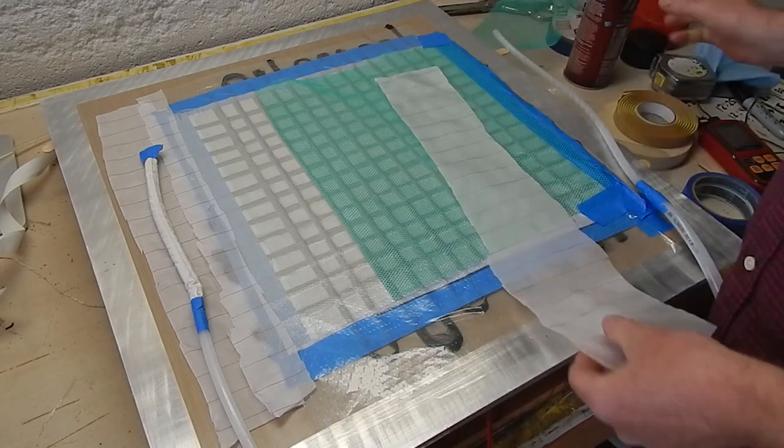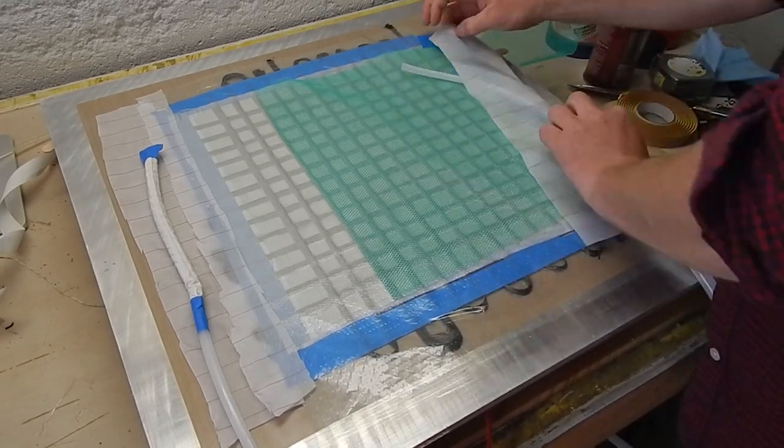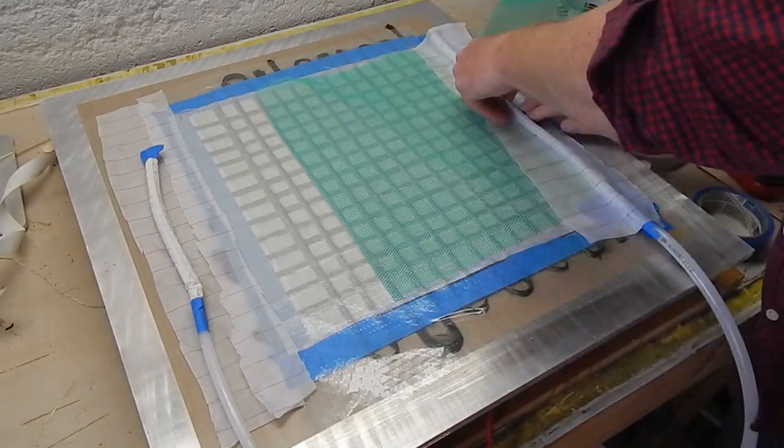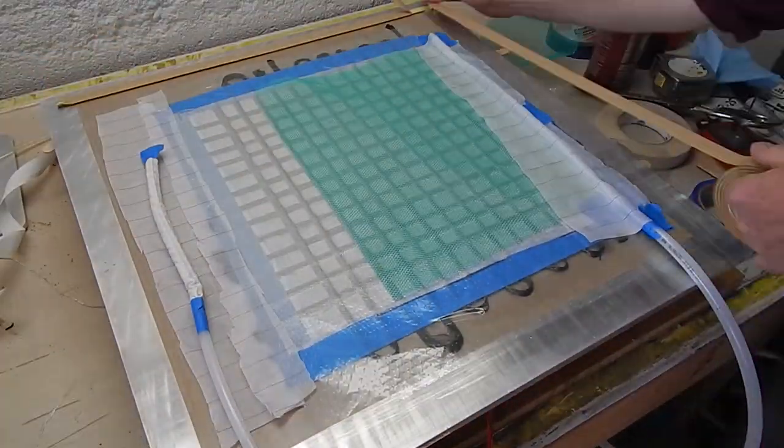You can see I put the flow media only part way through. Instead of using peel-ply here, I used perforated release film. Got the resin inlet side here. It's just some spiral wrap covered in peel-ply.